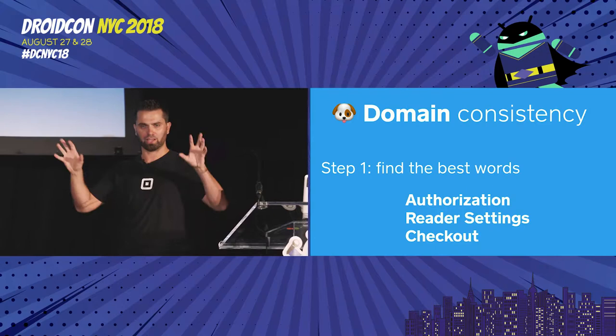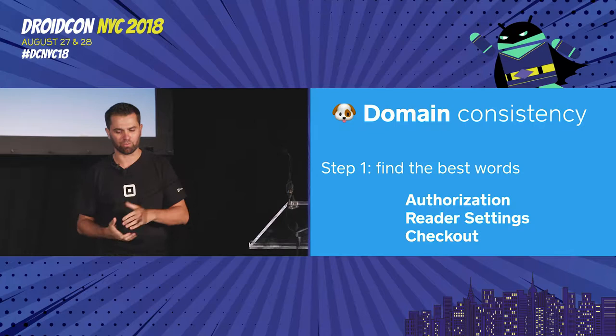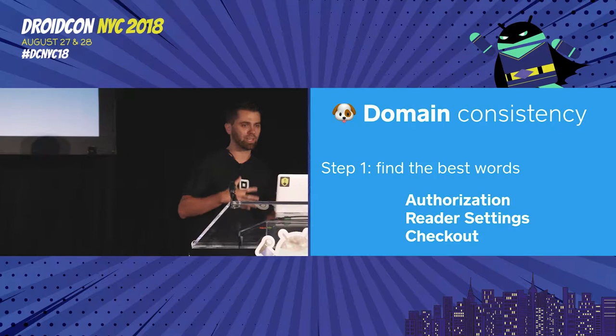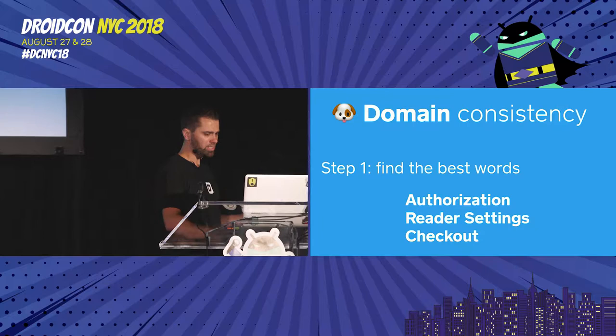The way we found those words is interesting — we didn't make them up. We went to the help sites for our customers and merchants and thought: what are the words people use outside of Square to describe this to normal people? We used that for our API. In terms of the overall SDK structure, we landed on: authorization, reader settings flow, and checkout — because with checkout you can split a bill, handle tips, signature, and receipts.